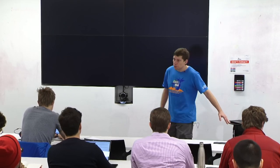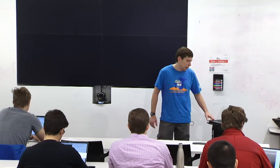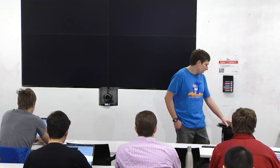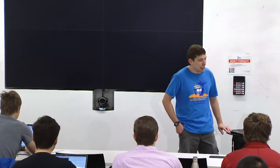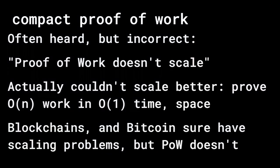Problem set two — there's a lot of work done. Congratulations to all the workers: 16 trillion hashes performed. How can we prove that? This is a personal gripe — I hear a lot of people say that proof of work doesn't scale.